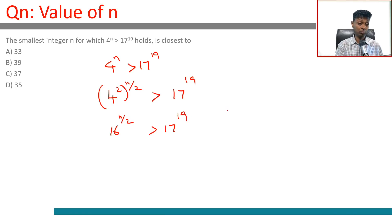We want to find the smallest n. Let me think about values that don't work. If I put n equals 38, then 16^19 is not greater than 17^19. So 16^(38/2) is not greater than 17^19. n cannot be 38. 38 doesn't work.